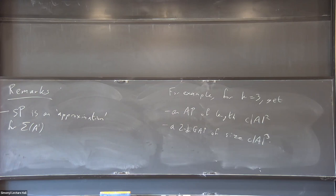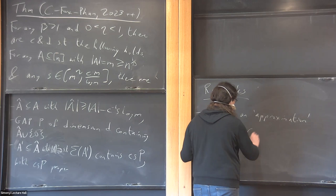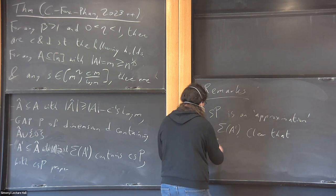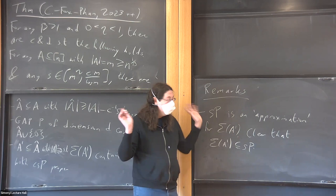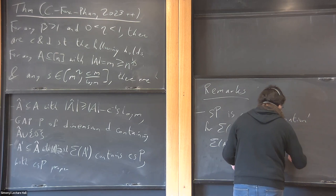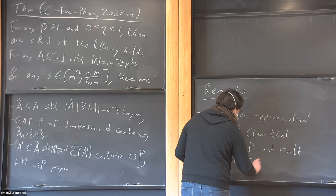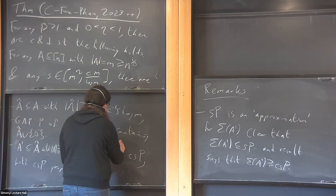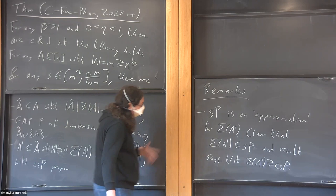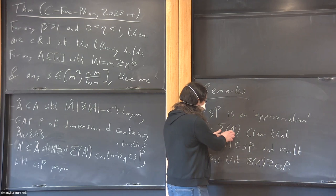On one hand Σ(A') is contained in s·P because there are s elements within the GAP, so adding at most s things from within P gives you s·P. The lemma tells you that Σ(A') actually contains c·s·P. So you're sandwiching from both sides — the subset sums approximate a large sum-set of a GAP.